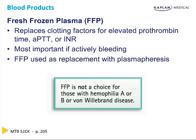You cannot donate factor 8, factor 9, or von Willebrand's factor because in a normal person those factors are stored underneath the endothelial cells lining the blood vessels — they're not in the circulating plasma. So you have to give people desmopressin to help them release their own factors, or give recombinant versions of factor 8 and factor 9. Fresh frozen plasma is the standard for people who are having acute bleeding with elevated PT/PTT, except for those with hemophilia or von Willebrand's.